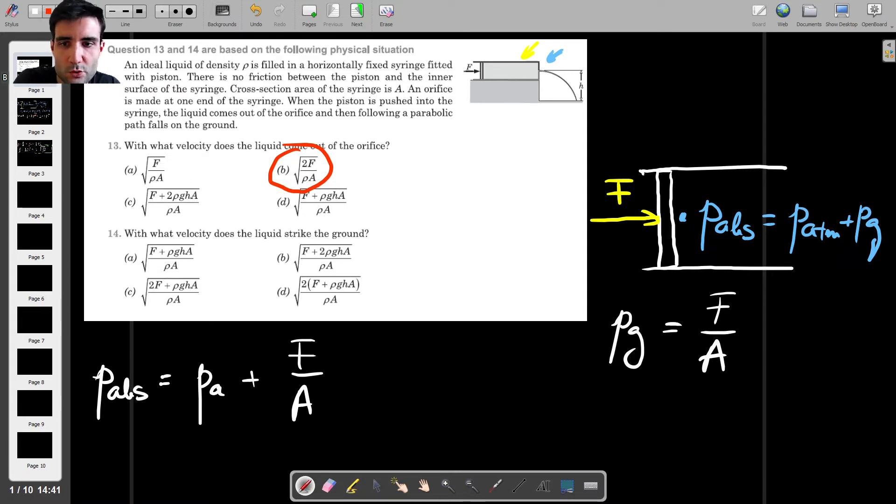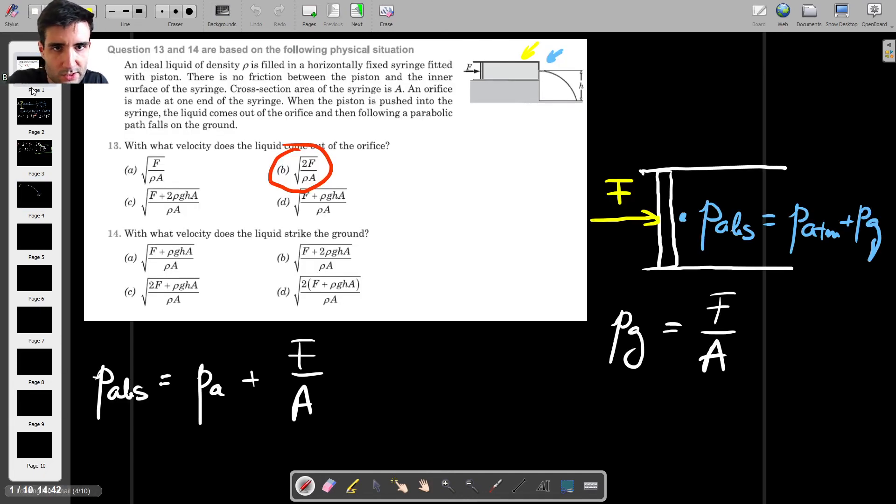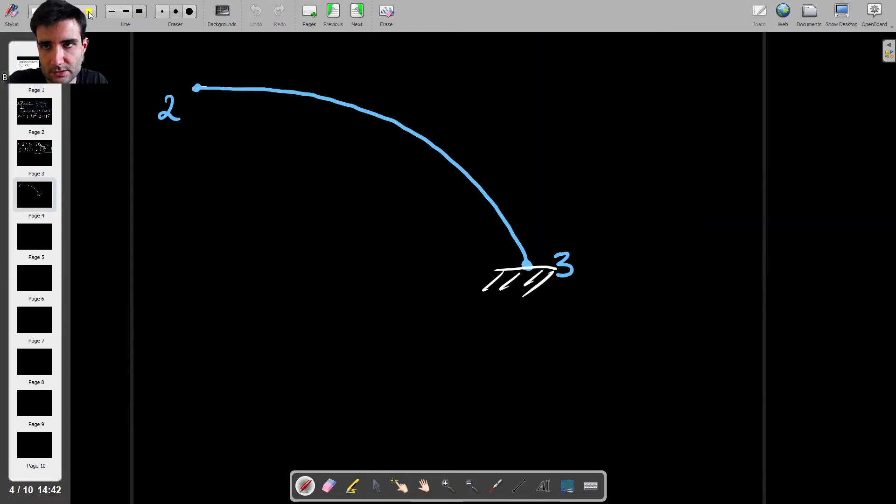And the next question is, with what velocity does the liquid strike the ground? So what I would do here is I'm going to use Bernoulli once again. You can do this in a few ways. You can do this using 2F, but the way in which I'll do it is as follows. So I'm going to look at a streamline which starts from the syringe outlet, which this used to be 0.2. And this is 0.3. This is where it hits the ground. And we know that height difference H. So this is H like that.